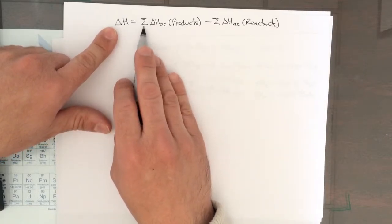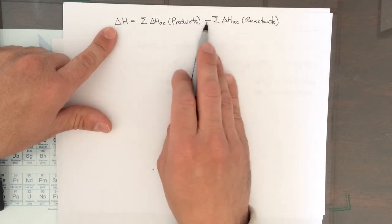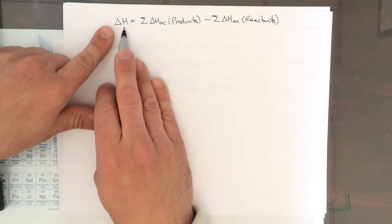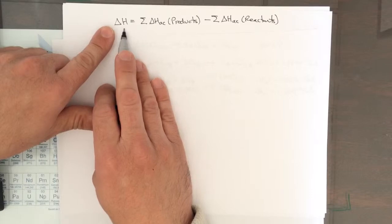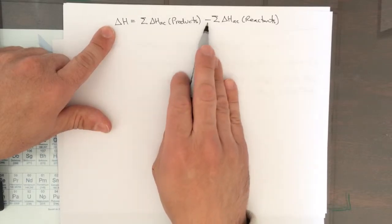According to this equation we sum—remember this symbol means sum—we add up all the delta HACs of the products. We subtract all the delta HACs of the reactants. That gives us the overall delta H of the reaction. The question is where does this minus sign come from? Why is it there?